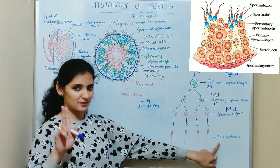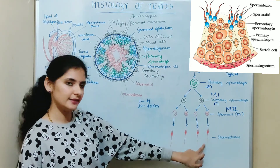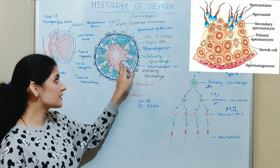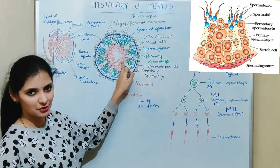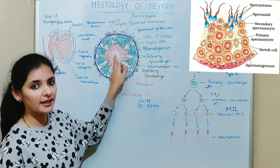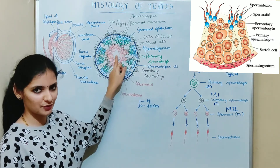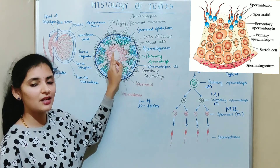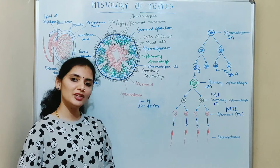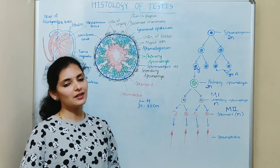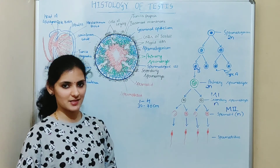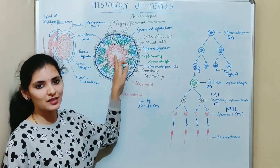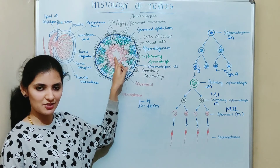The spermatozoa mainly consist of two parts: the head and the tail. The head part of the spermatozoa is found attached to the cytoplasmic process of the Sertoli cell, and the tail part extends into the lumen of the seminiferous tubule. Ultimately these sperms are released into the lumen and from there they enter the epididymis. That is how different cells are arranged from the basement membrane to the lumen of the seminiferous tubule.